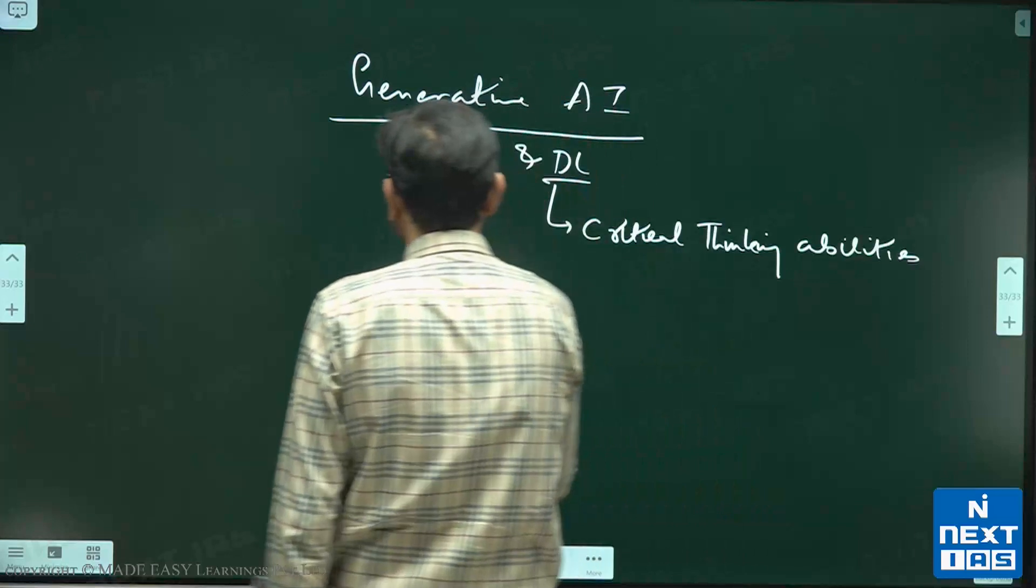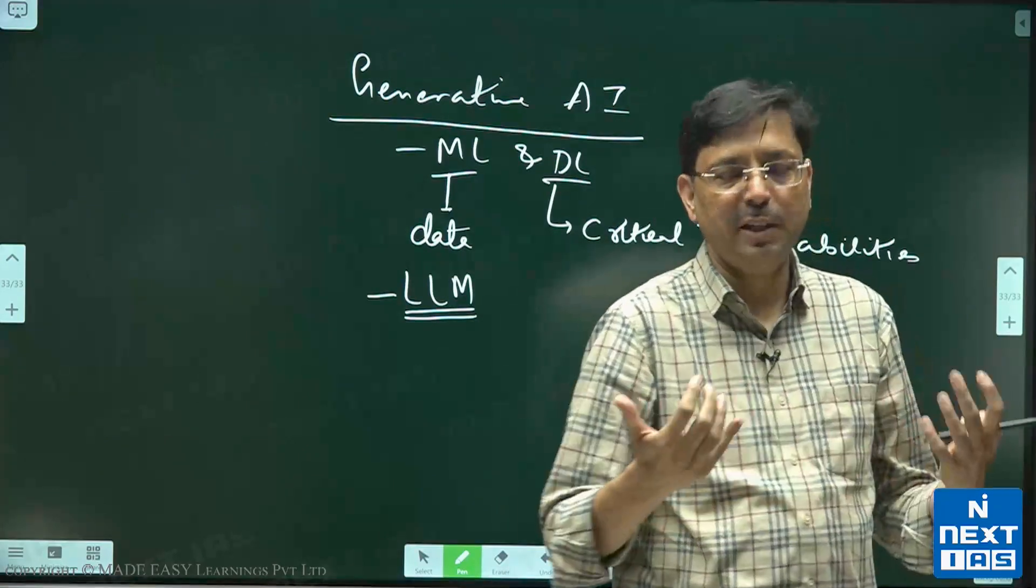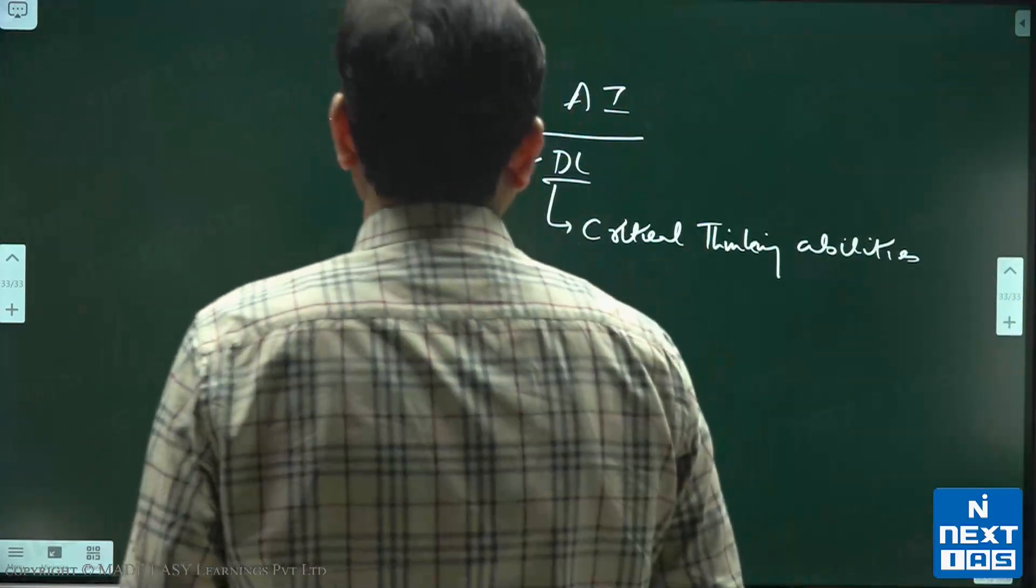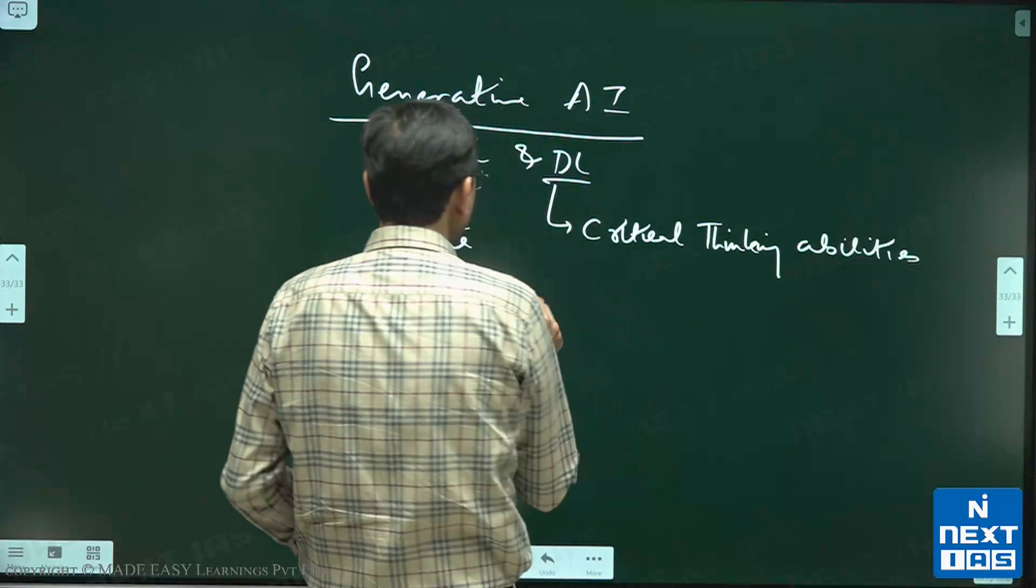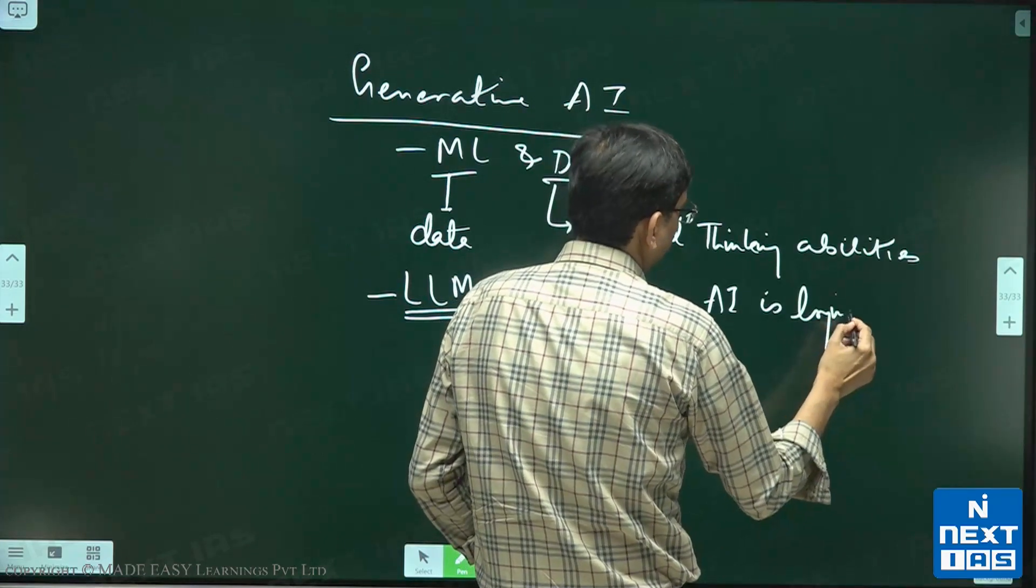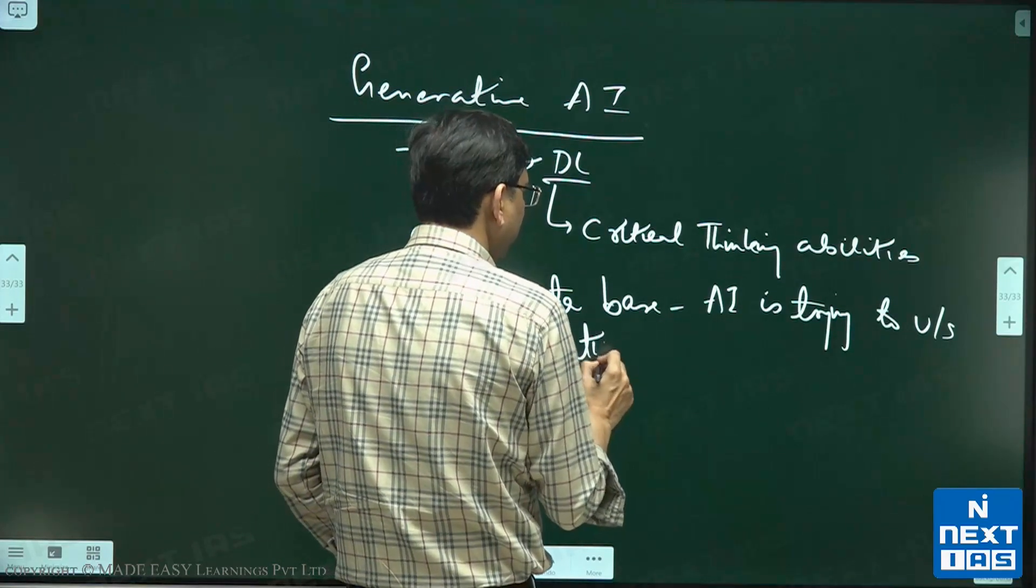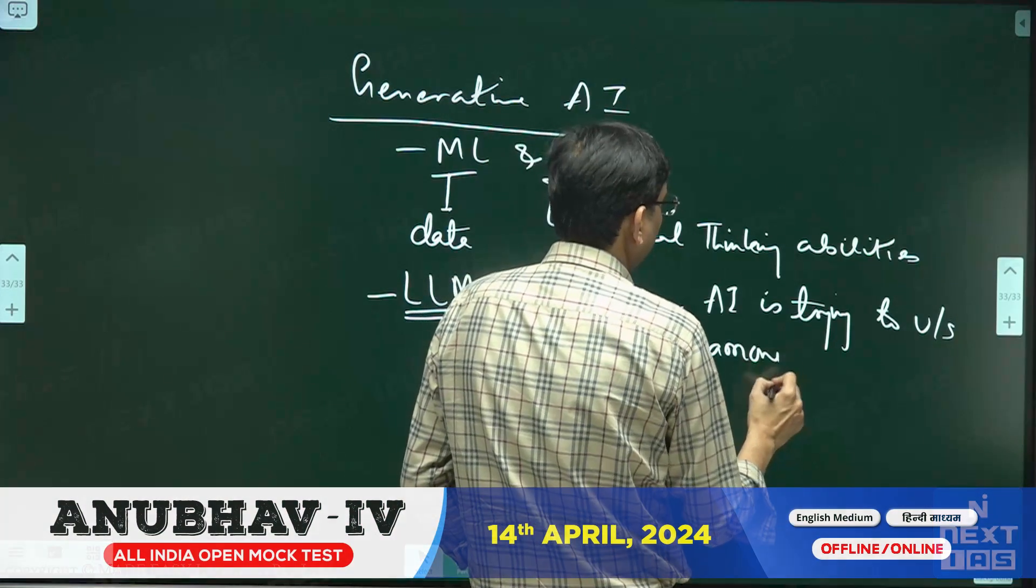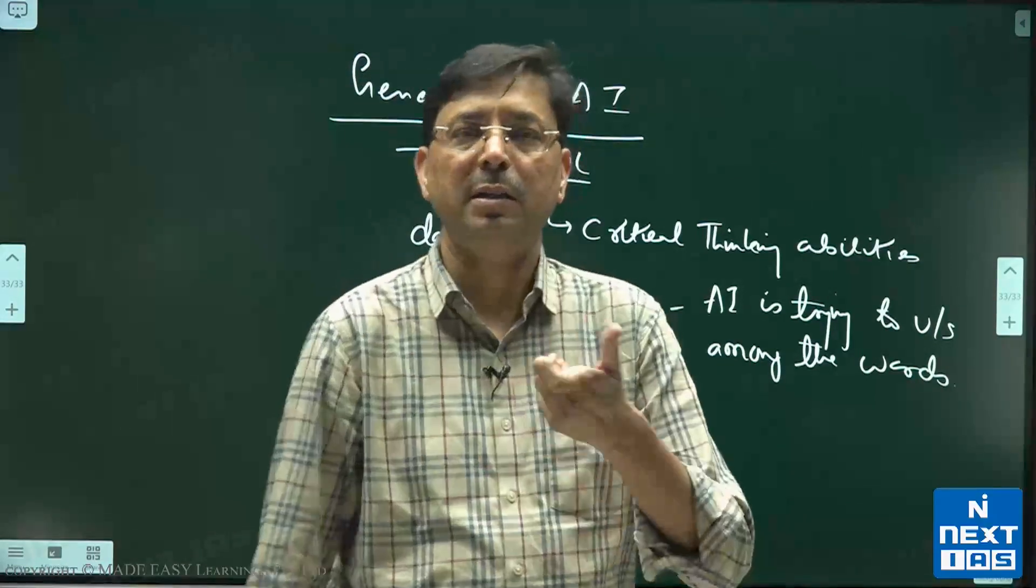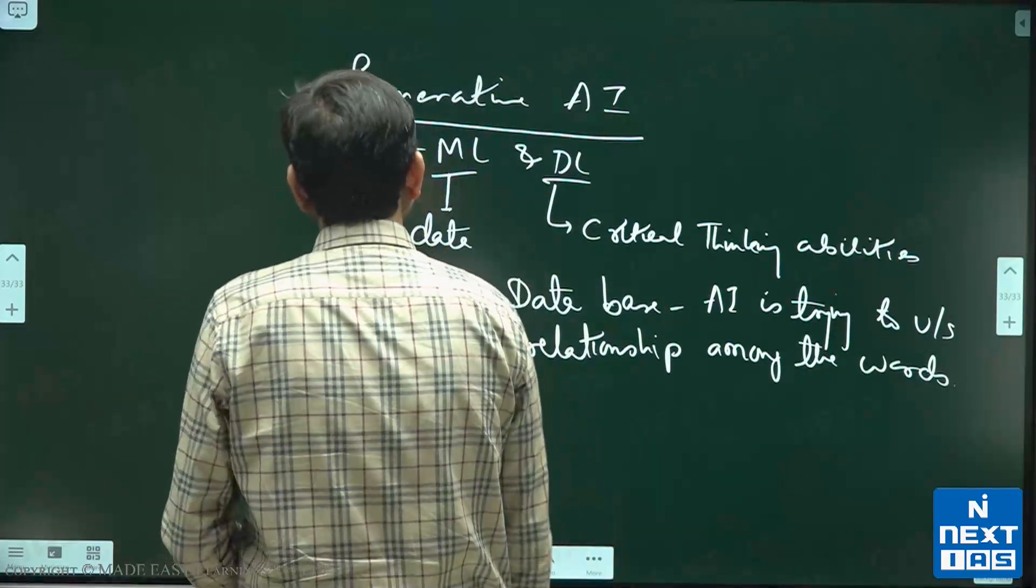Here we use large language model. Large language model means huge database where the AI is trying to understand the relationship among the words, like John, he, marry, she. That is large language model in generative AI.